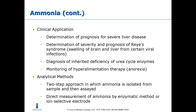Clinically, ammonia measurement is used to determine the prognosis of severe liver disease, to assess the severity and prognosis of Reye's syndrome — which involves swelling of the brain and liver caused by certain viral infections — for diagnosis of inherited deficiency of urea cycle enzymes, and for monitoring of hyperalimentation therapy, in which rich nutrients are delivered directly into the veins of patients suffering from anorexia. Analytical methods include a two-step approach in which ammonia is isolated from the sample and then assayed, as well as direct measurement by enzymatic method or ion-selective electrodes.